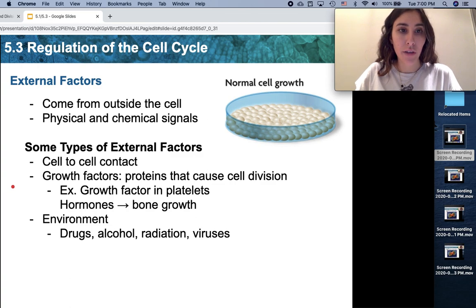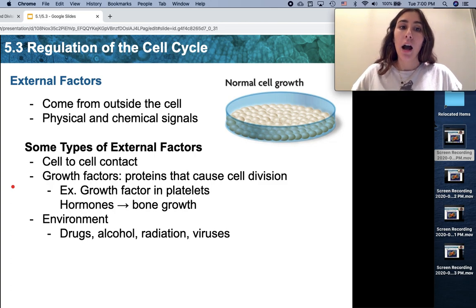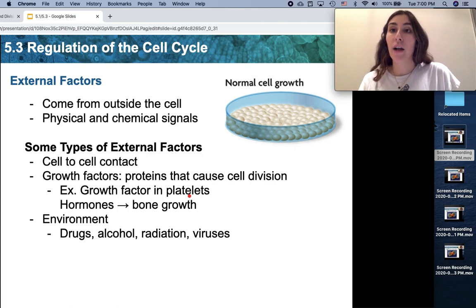The second type of external factor are growth factors. Growth factors are types of proteins that increase the rate of division, increase the amount of division that is happening. An example of a growth factor are the growth factors that are found in your platelets, in your blood. When growth factors are carried to certain types of cells, they cause these cells to divide at a higher rate. You would expect someone going through puberty to have high amounts of growth factors in their body.